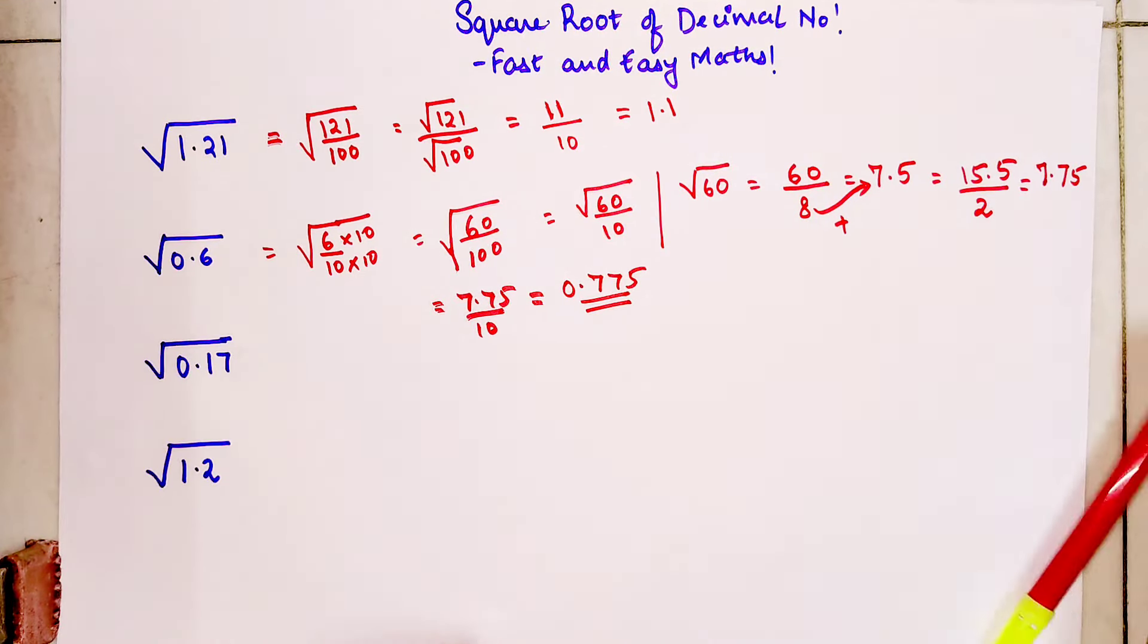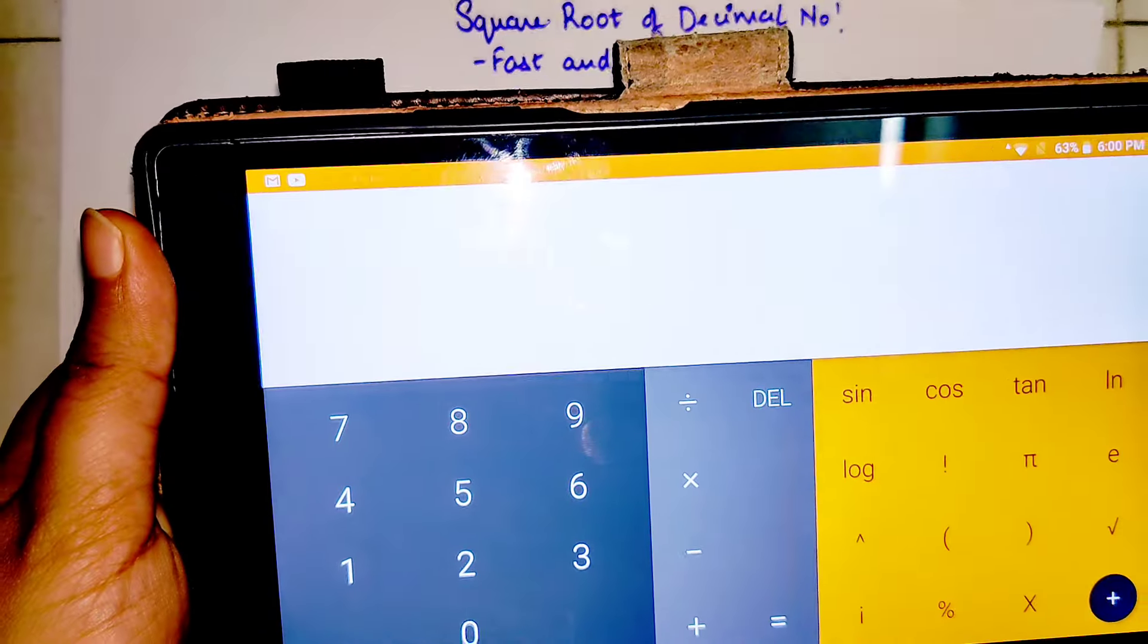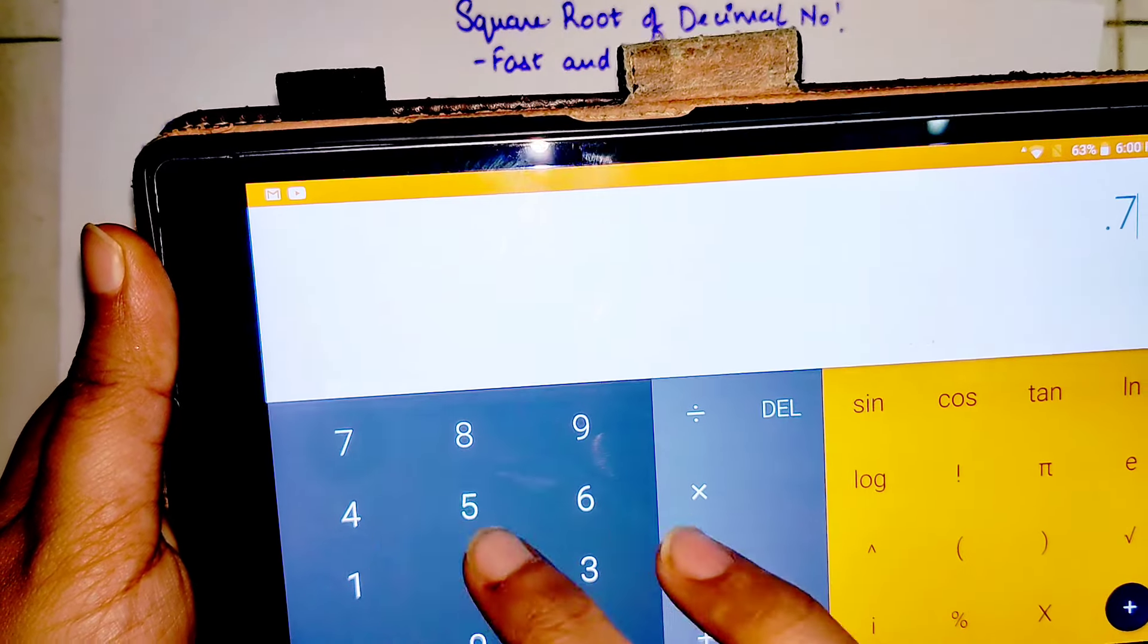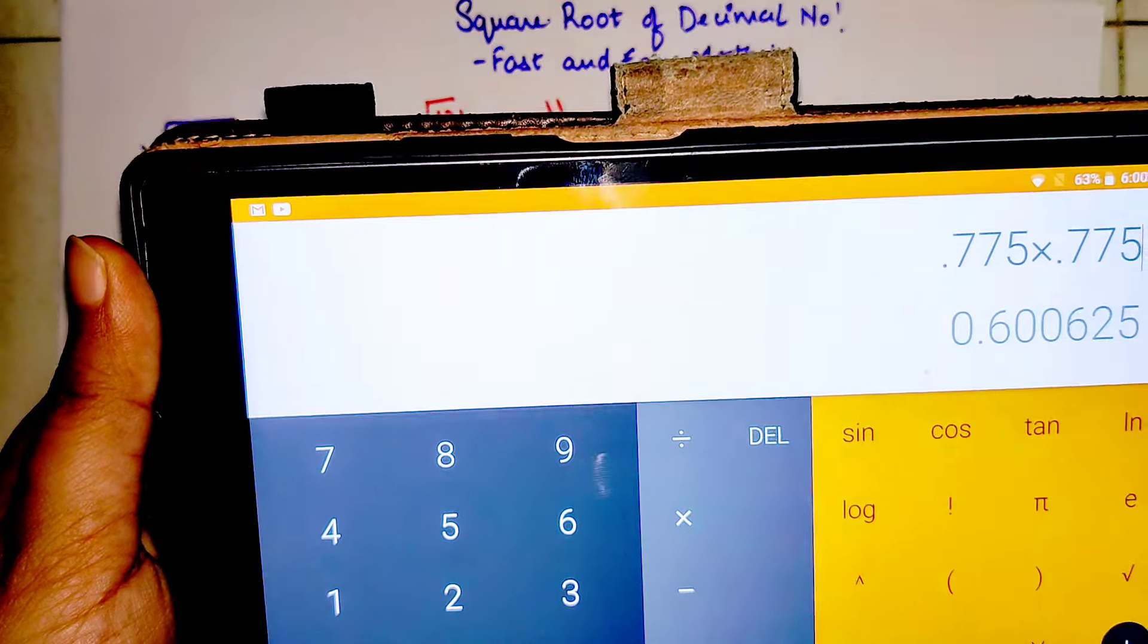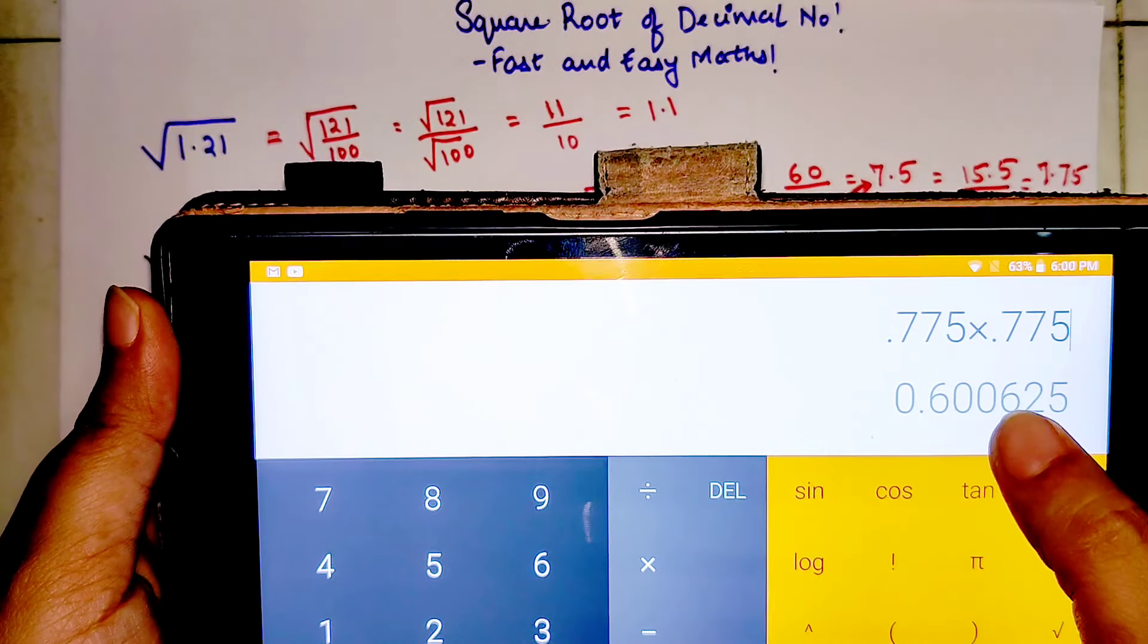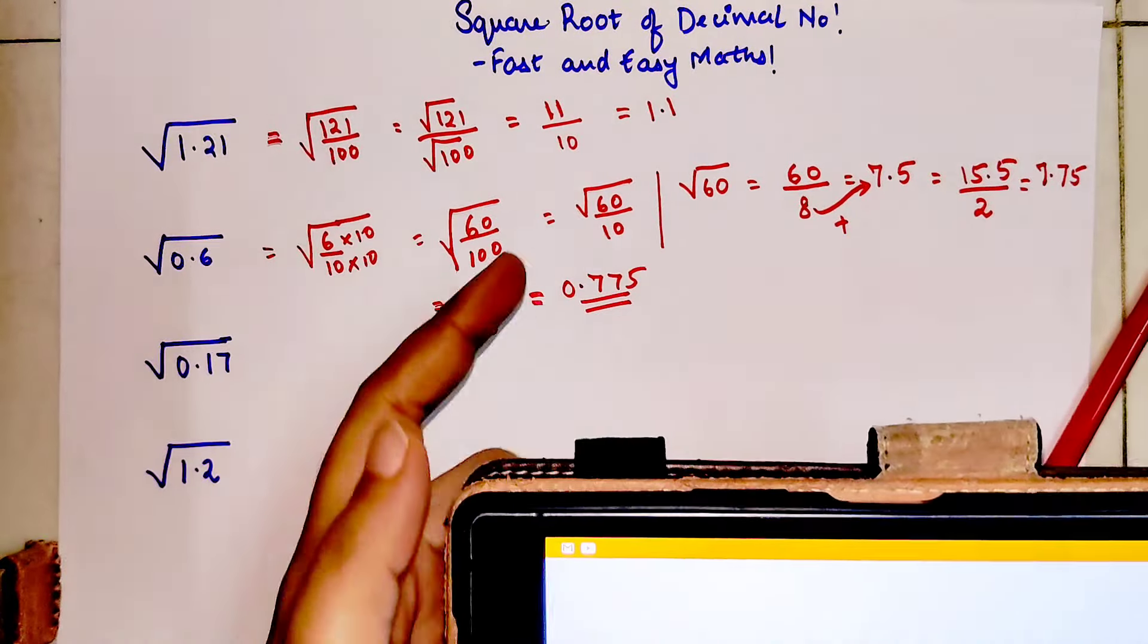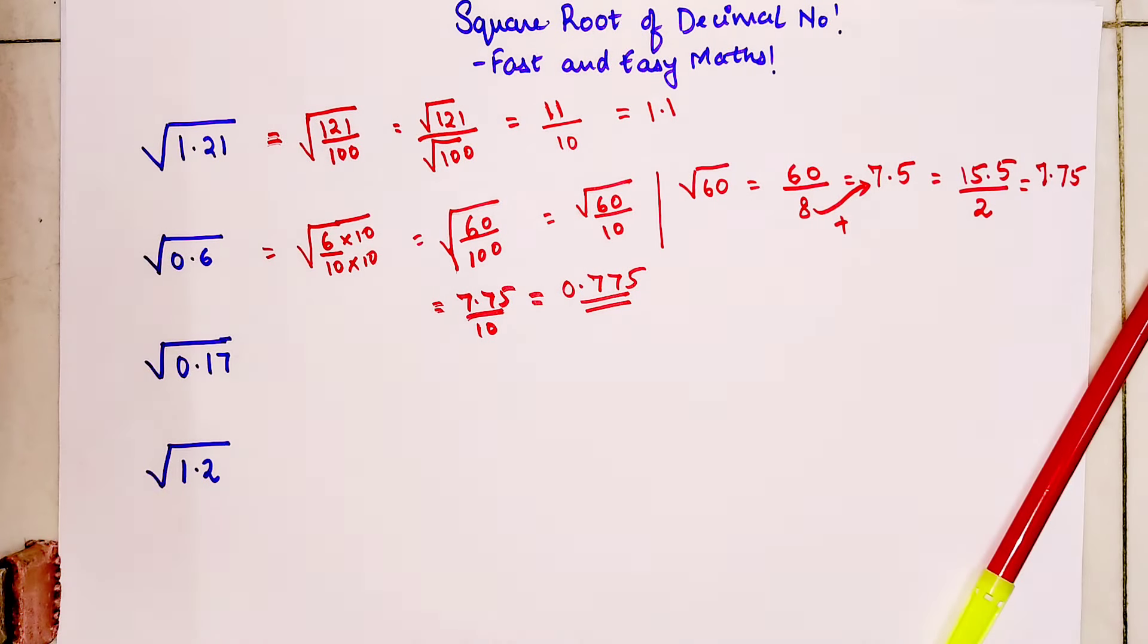If you have any doubts, then I will show this with the help of calculator. So here I am multiplying 0.775 into 0.775, so your answer is 0.600. So it's pretty much the same answer.